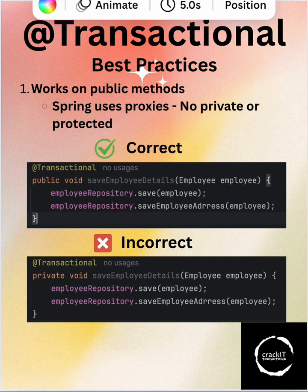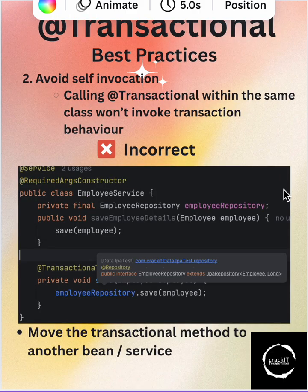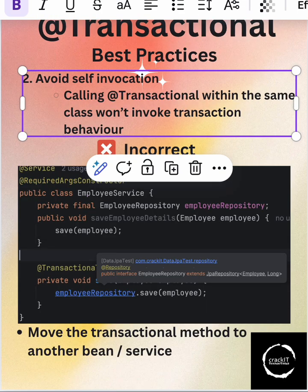So what are the best practices for using the @Transactional annotation? It should always be used with public methods and not on private methods. If you use it on private methods it will not work, because Spring internally uses proxies and private or protected methods are not allowed.